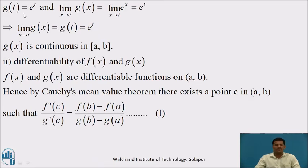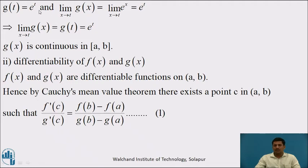For g(x) = e^x, putting x = t gives g(t) = e^t. The limit of e^x as x → t equals e^t. Since the limit and the value of the function are equal, by definition g(x) is a continuous function on [a, b].